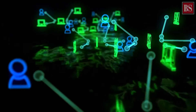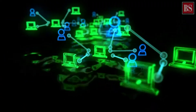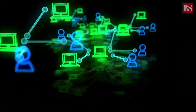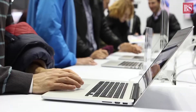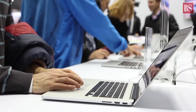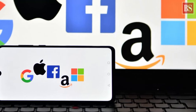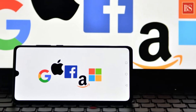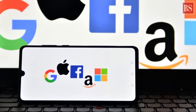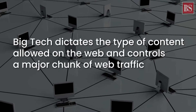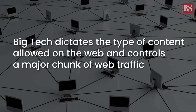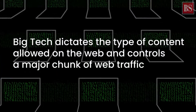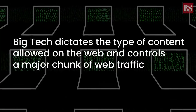It may come as a surprise to many that the internet was built as a decentralized network of computers and devices for free dissemination of information. Over time, the web was taken over by big tech companies, which not only dictate the type of content allowed on the web but also control a major chunk of web traffic now.